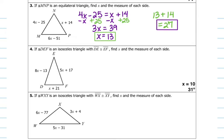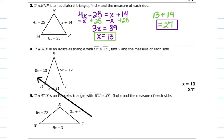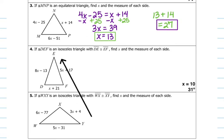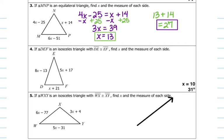Before you start number four on your own, notice it says isosceles this time — not equilateral. So you're not going to just pick any two sides because they're not all the same length. Make sure you pick the two sides that are congruent. Go ahead, try number four on your own, hit pause, and come back to check your answers.